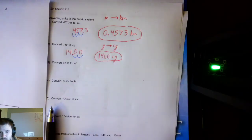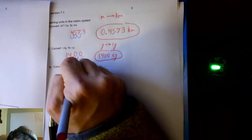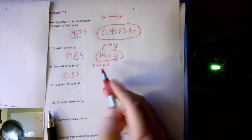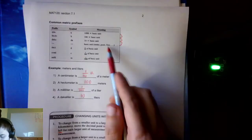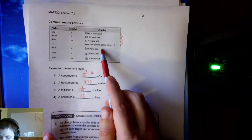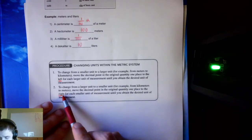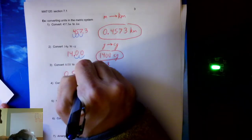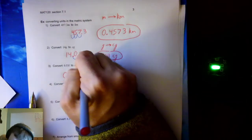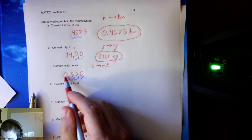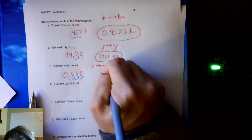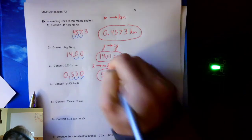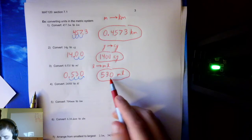Always identify which direction you're shifting first. Example 3: Convert 0.53 liters to milliliters. This is larger to smaller, so I move the decimal right. Liters to milliliters is 3 hops down, so I make 3 hops right. I need to fill in a zero, giving me 530. So 0.53 liters equals 530 milliliters.